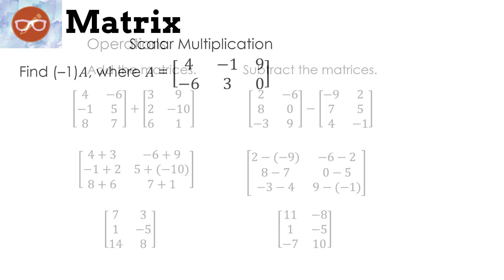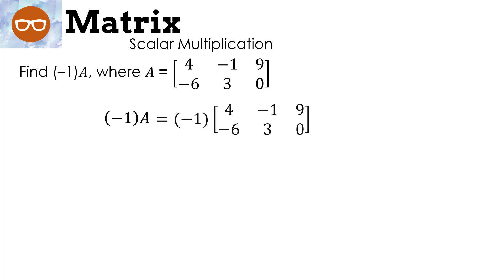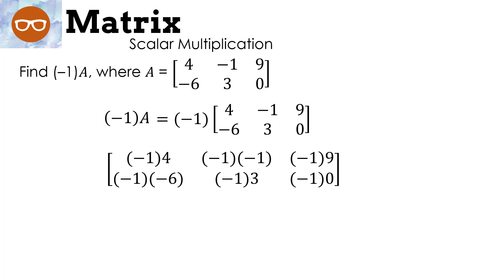We just talked about adding and subtracting. Let's look at something called scalar multiplication — basically, we take any number times a matrix. For this one, we're going to find negative 1 times matrix A, where A is [4, negative 1, 9, negative 6, 3, 0]. We take negative 1 times every element inside the matrix, giving us negative 4, 1, negative 9, 6, negative 3, 0. A scalar can be any number — a decimal, a fraction, it really doesn't matter. And yes, elements of a matrix can be decimals or fractions too.